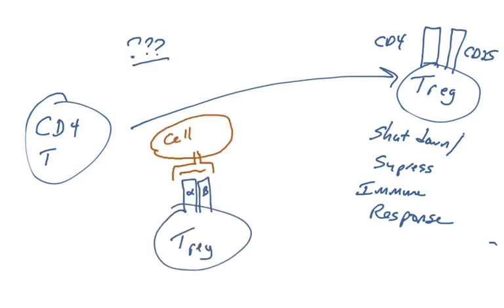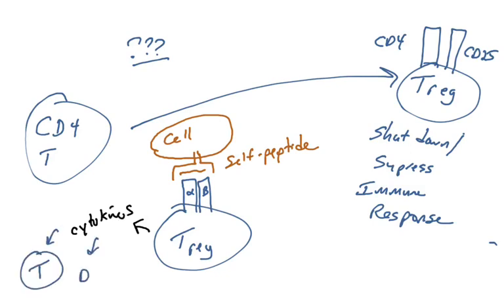These cells function because they have a T cell receptor that binds and recognizes self-peptide. We don't want to attack cells that are presenting self. And in fact, this recognition will cause these cells to release cytokines that actually suppress the immune response. They suppress T cell immune response. They suppress dendritic cells. These are newly discovered T cells, newly studied T cells. So we don't know a whole lot about them, but we do know that they are important in controlling the immune system.